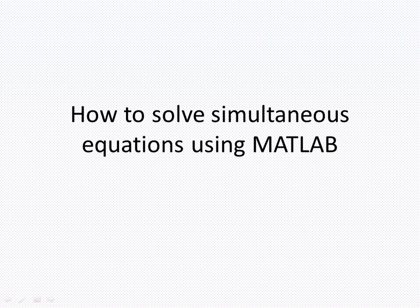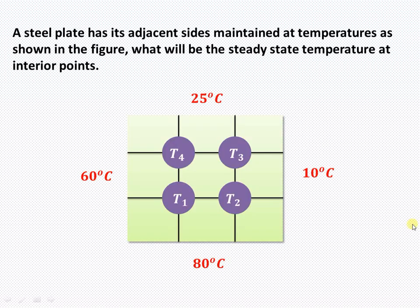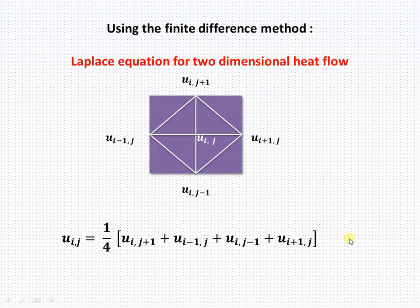Let us understand how to solve simultaneous equations using MATLAB code. We consider the example of two-dimensional heat flow where the temperatures of the edges of a plate are given: 60°C, 80°C, 10°C, and 25°C. We need to find the interior temperatures T1, T2, T3, and T4 using a suitable grid size and the Laplace equation for two-dimensional heat flow.